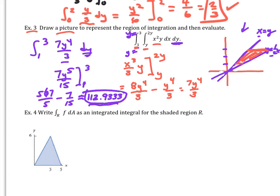With dy on the outside, our cuts run from y = 1 to y = 3 as horizontal slices. Each cut spans from x = y to x = 2y, so those are the lengths of the cuts forming the base of the region. That's the geometric interpretation of this iterated integral.